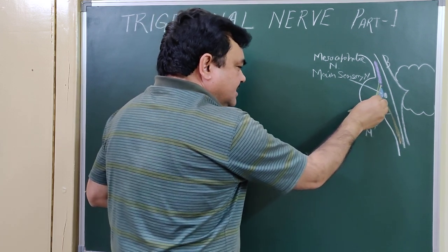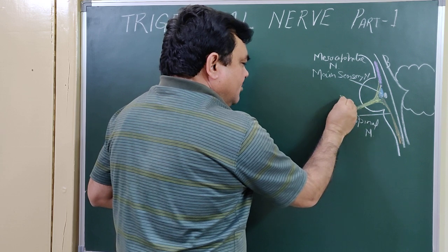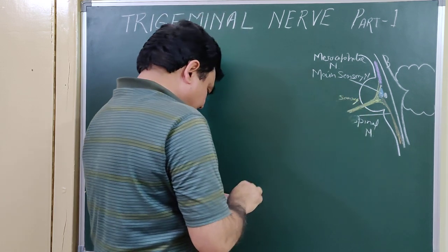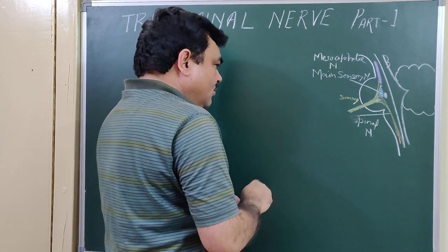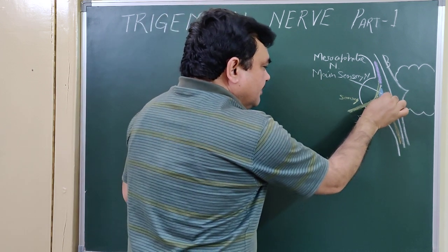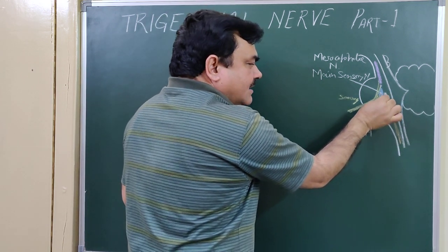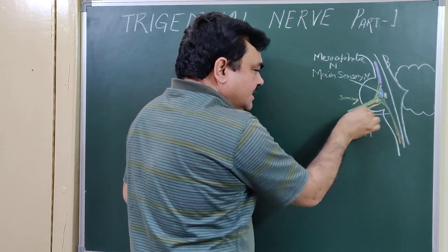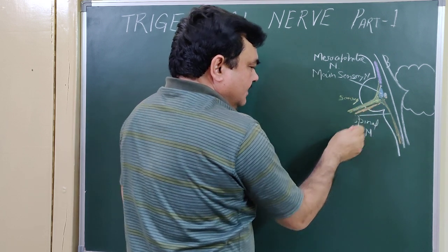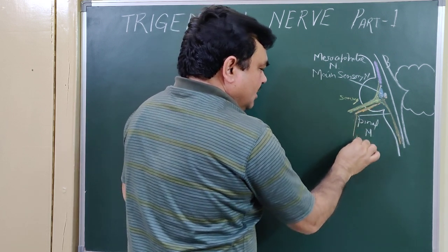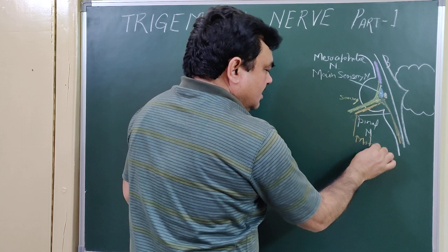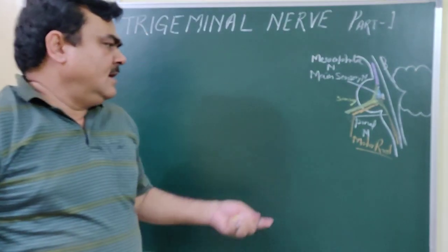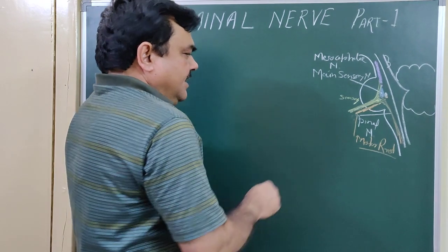This is the motor root and this is the sensory root of the Trigeminal nerve. There is another root — that is the motor root. The motor nucleus lies medial to the sensory nuclei, so the motor root lies below the sensory root. So these are the two roots of the Trigeminal nerve.